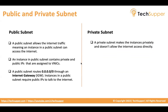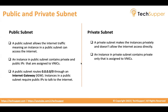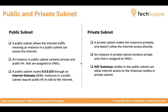For private subnets, resources don't need to be accessed from the public internet, but sometimes a private resource does need to access the internet. Those resources can be created in a private subnet. A private subnet keeps instances private and does not allow direct internet access, but there are ways to route outbound traffic. An instance in a private subnet contains only private IPs. The NAT gateway plays a very important role here — it allows private resources to access the internet outbound, and the NAT gateway is assigned a public IP.